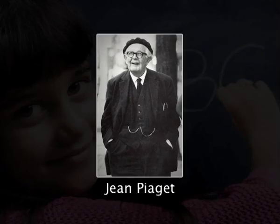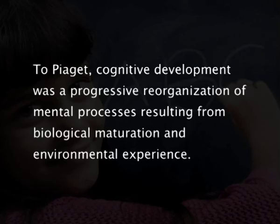Another proponent in the field is Jean Piaget, who developed the theory of cognitive development. This theory deals with the nature of knowledge, how people acquire it, and how they construct it. According to this theory, intelligence is developed through four stages. To Piaget, cognitive development was a progressive recognition of mental processes resulting from biological maturation and environmental experience. He believed that children construct an understanding of the world around them, experience discrepancies between what they know and what they discover, and then adjust their ideas accordingly. Child-centered classrooms and open education are direct results of his theories.